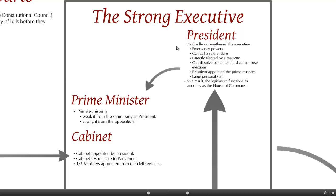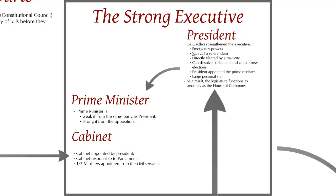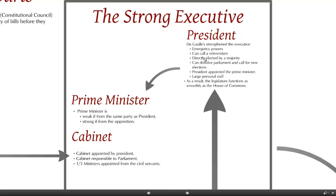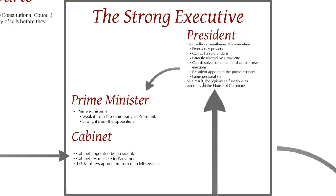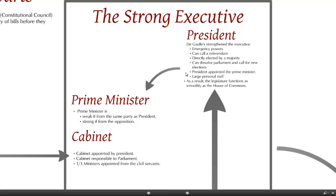He was concerned with the gridlocks of the Third and Fourth Republic and wanted to avoid those. So whereas the Americans reacted to the United Kingdom's strong executive by creating checks and balances to avoid concentration of power, Charles de Gaulle wanted to make sure that government could govern effectively. So he strengthened the executive: he gave it emergency powers, the power to call a referendum, to dissolve parliament and call for new elections, and also to appoint the prime minister. Because of all these powers rested in the president and the constraints on parliamentary powers, the governing process is as smooth as in the House of Commons.